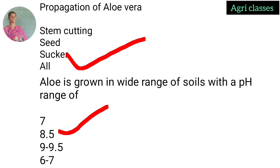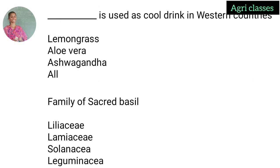Aloe vera pH range is 8.5 in the soil. Look out for rooted suckers — that is the propagation method. Next question: which plant is used as a cool drink in western countries? Options: lemongrass, aloe vera, ashwagandha, or all of the above. The correct answer is aloe vera.